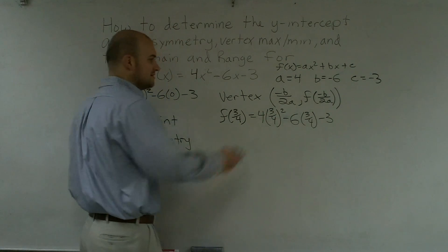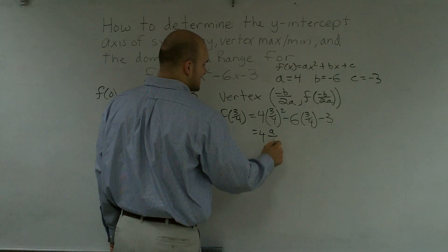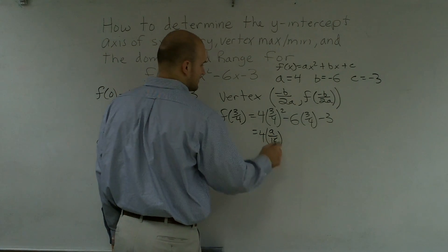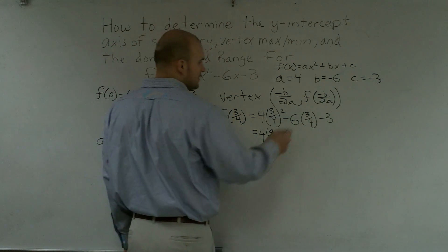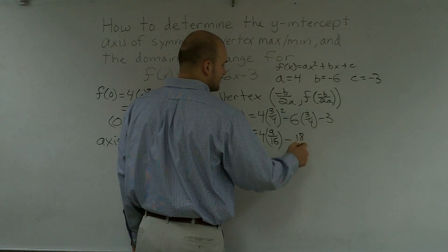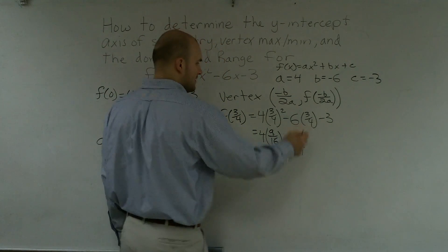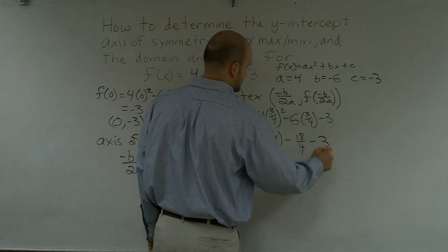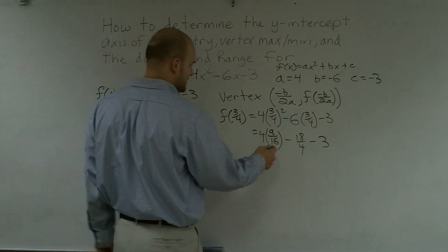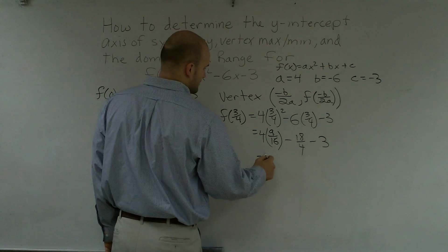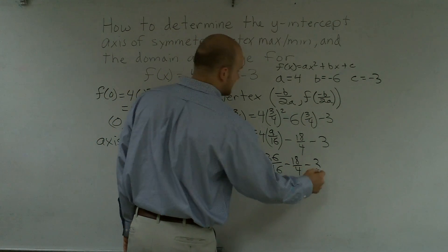So (3/4)², you just square the top and the bottom, so it's going to equal 4 times 9/16 minus, you can multiply this across, it's going to be 18/4, and then minus 3.